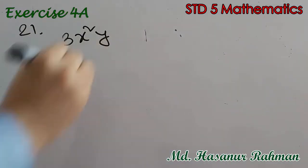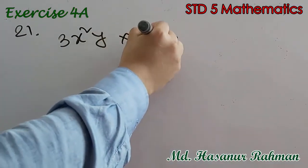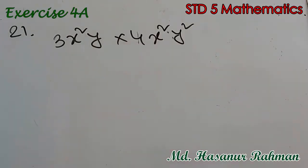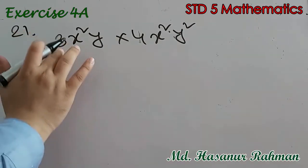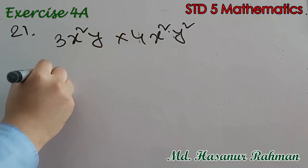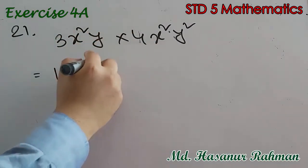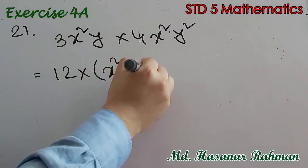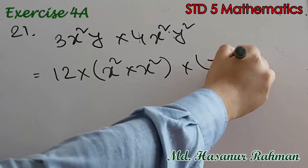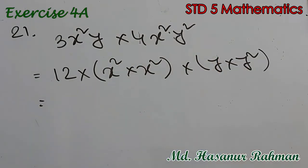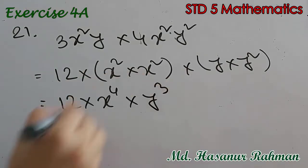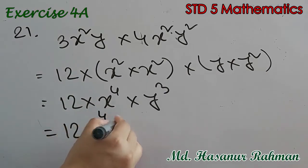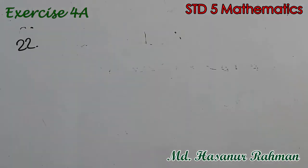Number 21 says 3x squared y into 4x squared y squared. First multiply the numbers: 3 into 4 is 12. Then x squared into x squared gives x to the power 4. And y into y squared gives y cubed. So the answer is 12x to the power 4 y cubed.